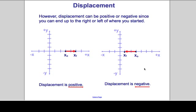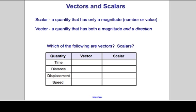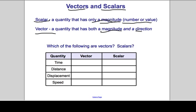Displacement can occur in the X axis or the Y axis. For now, we'll stick with the X axis. We've defined several quantities — time, distance, displacement, and speed — and some of these have a direction indicated by a sign. A scalar is a quantity that only has a magnitude, a numeric value, but does not have a direction. A vector has both a magnitude and a direction, and we use a positive or negative sign to indicate that direction.